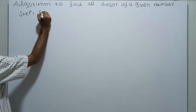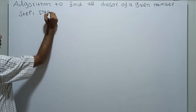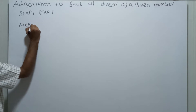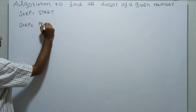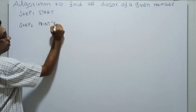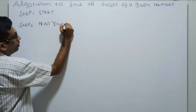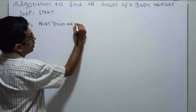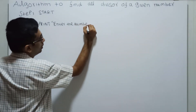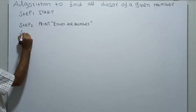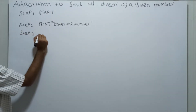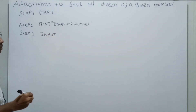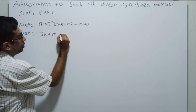Step 1 is the logical start of the algorithm. Step 2: Print 'Enter the number.' Step 3: Input N.